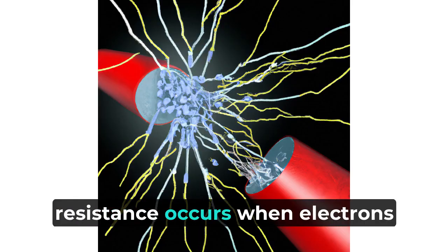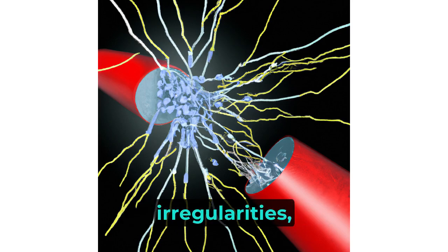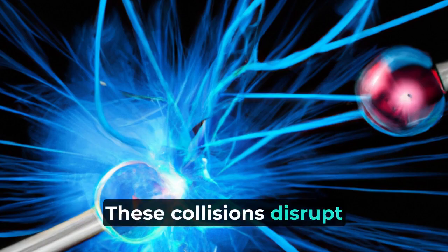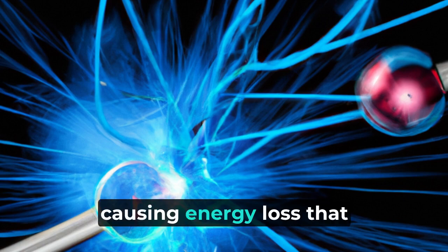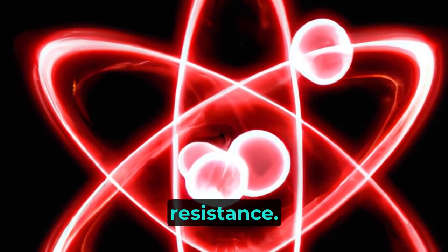At the quantum level, resistance occurs when electrons moving through a conductor collide with atomic irregularities, such as a missing atom, or vacancy. These collisions disrupt the flow of electrons, causing energy loss that increases atomic vibrations, producing heat, and resulting in electrical resistance.